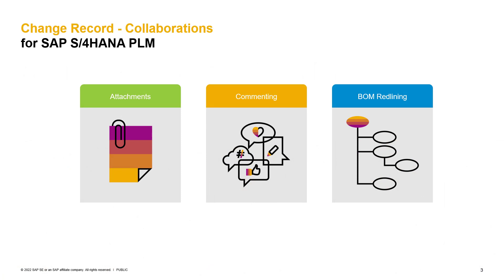In general, we have three different collaboration and communication possibilities in place: attachments on header and item level, commenting on header and item level, and BOM redlining.